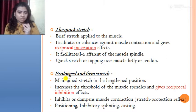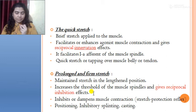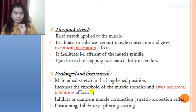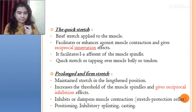In prolonged and firm stretch, maintained stretch in the lengthened position increases the threshold of the muscle spindles and gives a reciprocal inhibition effect. For example, to increase elbow extension, we give sustained stretch to the elbow flexors (biceps). Positioning, inhibitory splinting, and casting are examples of this technique.